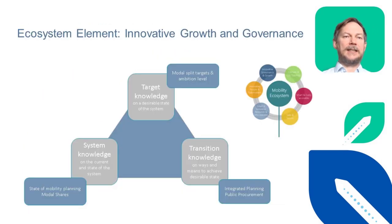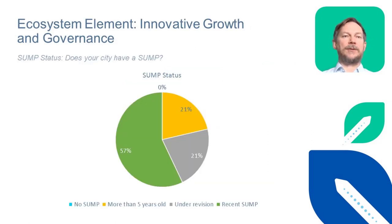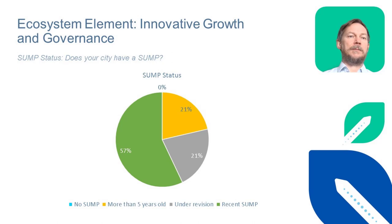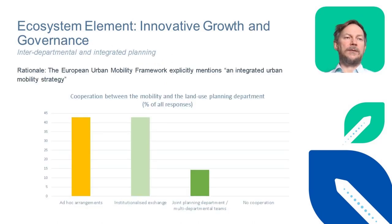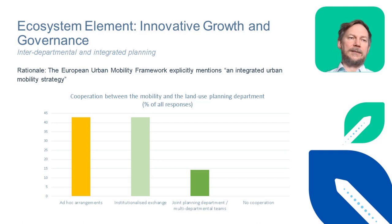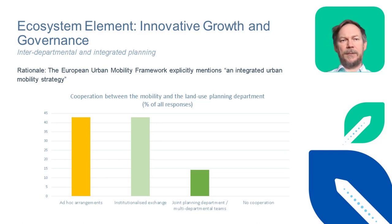The governance section looked at the state of mobility planning and core indicators such as modal splits. It also assessed whether cities use their purchasing power to influence urban mobility. All cities that responded either have a recent sustainable mobility plan, a plan more than five years old, or are currently reviewing one — meaning all cities have experience with sustainable urban mobility planning. This also means there might be a bias towards cities that have already recognized the importance of sustainable urban mobility, which we should keep in mind when interpreting the results.